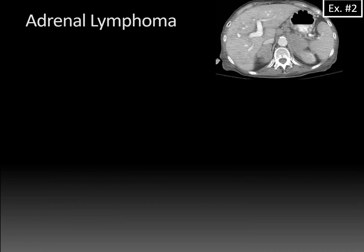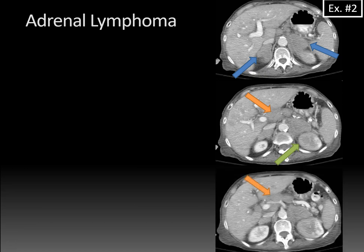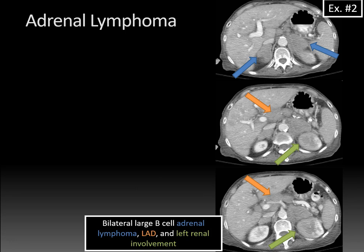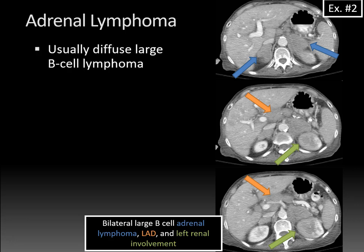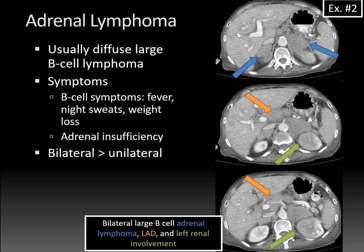Here's a different, more dramatic case showing bilateral large adrenal masses that are adreniform in shape, hypodense and ill-defined. There's also lymphadenopathy in the portohepatic and peripancreatic region, and infiltrative hypodensity into the left kidney. All these masses are relatively isodense to skeletal muscle on CT — a typical feature for lymphoma. This was a patient with bilateral large B-cell adrenal lymphoma with metastatic lymphadenopathy and left renal involvement. Adrenal lymphoma is non-Hodgkin's lymphoma, usually diffuse large B-cell lymphoma. Symptoms often include B-cell symptoms like fever, night sweats, and weight loss, as well as adrenal insufficiency. They tend to be bilateral and may invade into the adjacent kidney.